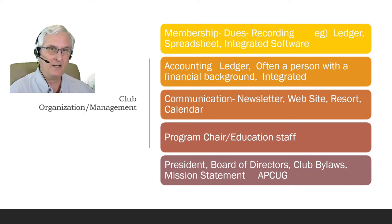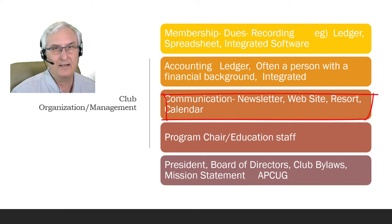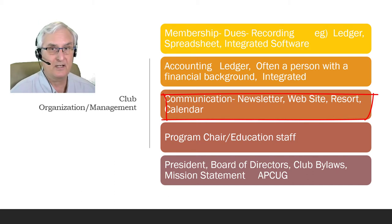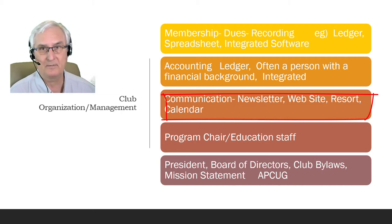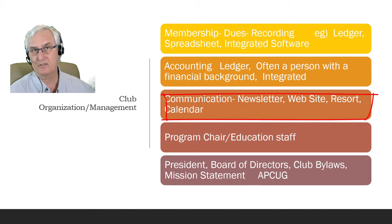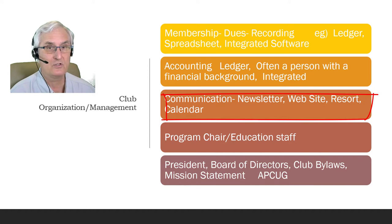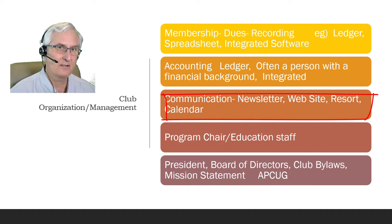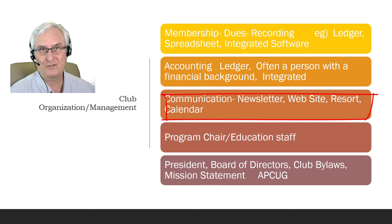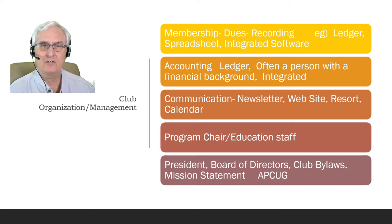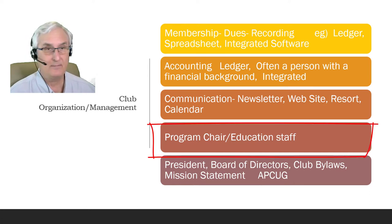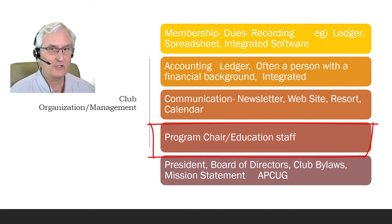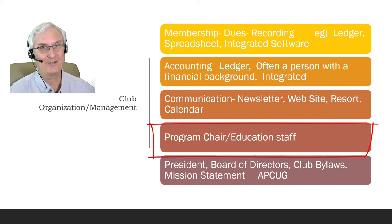Then we come to communication within your club. You're probably going to want a newsletter and some way to contact your members. We'll talk about newsletters, whether you should have a website, advertising in your resort's newsletter, and a calendar to communicate with members. You may also have a program chair and educational staff, SIG leaders, and some communication there. I'm not going to talk a lot about program chair and education staff because that's what I've done for 10 years and I have other videos on that.